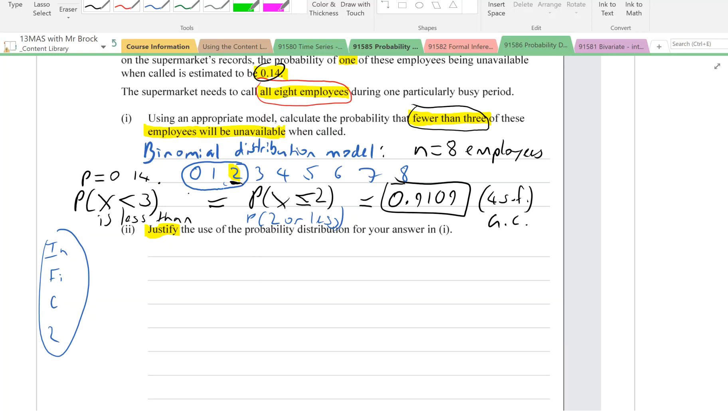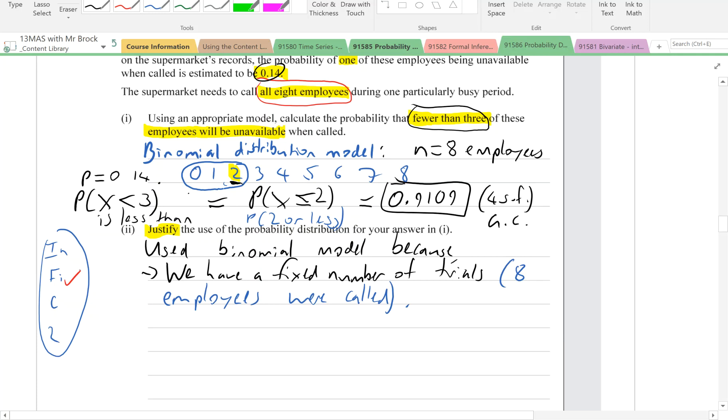Let's write down what we're doing. Used binomial model because we have a fixed number of trials. And then in context, really important, eight employees were called. So that is the fixed number of trials.